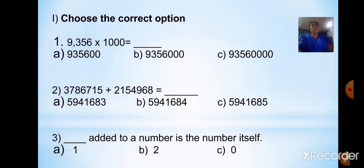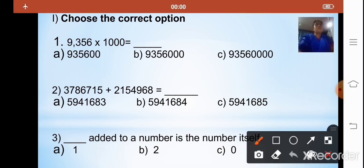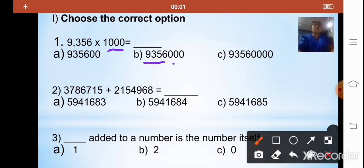Now based on chapter 2, let us solve some sums. The first one is: choose the correct option. The sum is 9356 multiplied by 1000. We already learned that any number multiplied by 100 or 1000 is followed by the corresponding zeros. Here the number is multiplied by 1000, so the answer is 9356 followed by three zeros. The correct answer is option B.